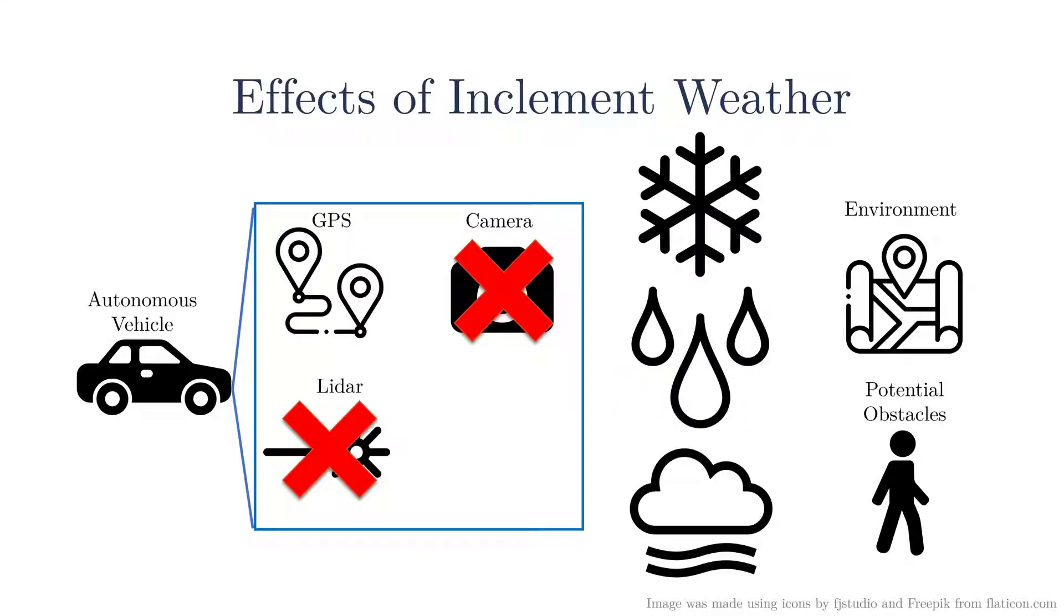However, inclement weather such as snow, rain, and fog can corrupt data collected by cameras and lidars. An autonomous vehicle may fail to work reliably in these situations. To operate in these conditions, many autonomous vehicle sensor platforms incorporate radar, which are relatively immune to inclement weather.